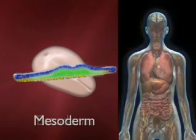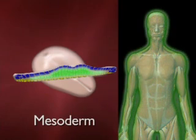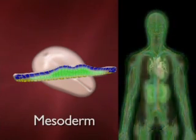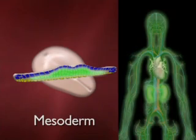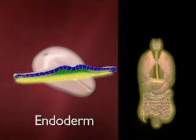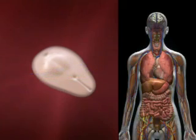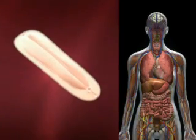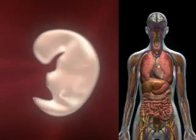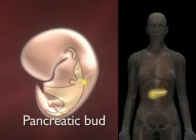The middle part, the mesoderm — shown in green — gives rise to the muscle, including the kidneys and the heart. And the endoderm gives rise to the whole gut tube: the lung, the liver, the intestine. To give one more detailed example, let's think about the development of the endoderm and, in this case, the formation of the pancreas. There's the pancreatic bud, which comes out of the endodermal derivative.